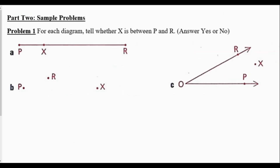Problem one: for each diagram, tell whether X is between P and R. In diagram A, points P, X, and R are all on the same line, therefore they are collinear — yes, X is between P and R. In diagram B, points P, R, and X are not on a line, therefore they are not collinear. In diagram C, points R, P, and X are again not on a line, so these are not collinear either.